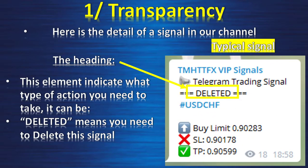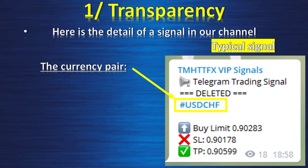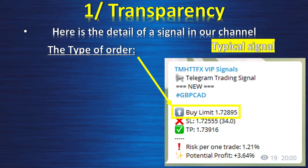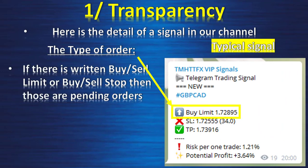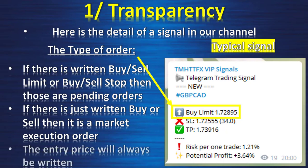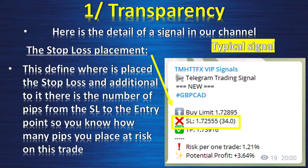'Deleted' means you need to delete the signal before it was activated. The currency pair element indicates what currency pair or instrument the signal is for. The type of order: if it reads buy/sell limit or buy/sell stop, those are pending orders; if it just reads buy or sell, that is a market execution order, and the entry price is always written. The stop loss placement defines where the stop loss is placed, plus the number of pips from the stop loss to the entry — so you know exactly how many pips you are risking on the trade.